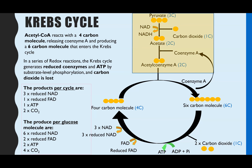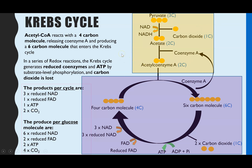Just to recap: the top part is the link reaction, which happens in the mitochondrial matrix. The lower part is the Krebs cycle, also known as the citric acid cycle, and this also happens in the mitochondrial matrix.